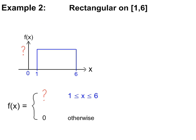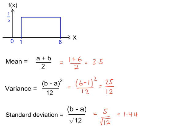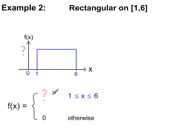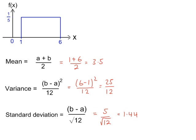Example 2: finding a missing value. The width of the rectangle is 6 minus 1, which is 5, so 1 fifth will be the height, because width times height should equal 1. So the height is 1 fifth, or 0.2. Then we can calculate the mean, variance, and standard deviation as before.